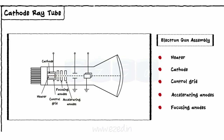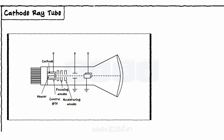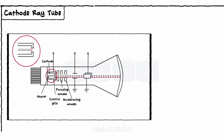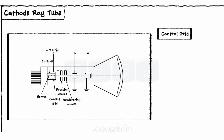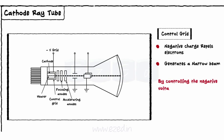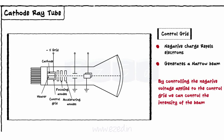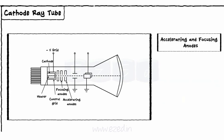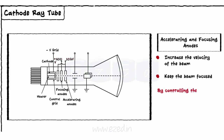Cathode is indirectly heated to emit electrons. These electrons are then passed through the control grid. The control grid has a centrally located hole, coaxial with the axis of the tube. A negative voltage is supplied to the grid; this negative charge repels electrons and generates a narrow beam. Thus, by controlling the negative voltage applied to the control grid, we can control the intensity of the beam. This electron beam is then passed through a set of accelerating and focusing anodes. These anodes are supplied with high positive voltage and increase the velocity of the beam and keep the beam focused. By controlling the positive voltage applied at anodes, the focus of the beam can be controlled.